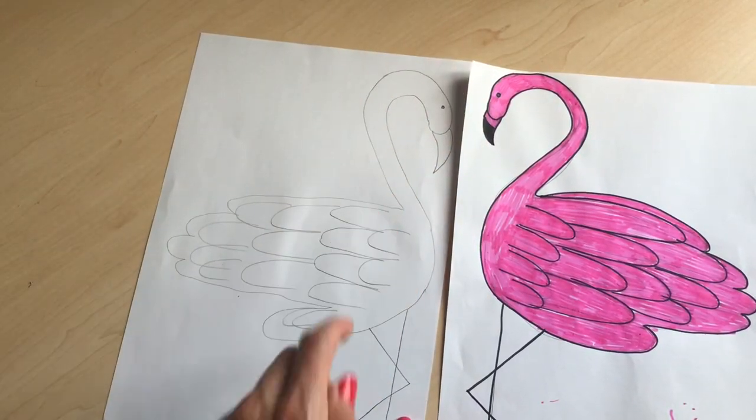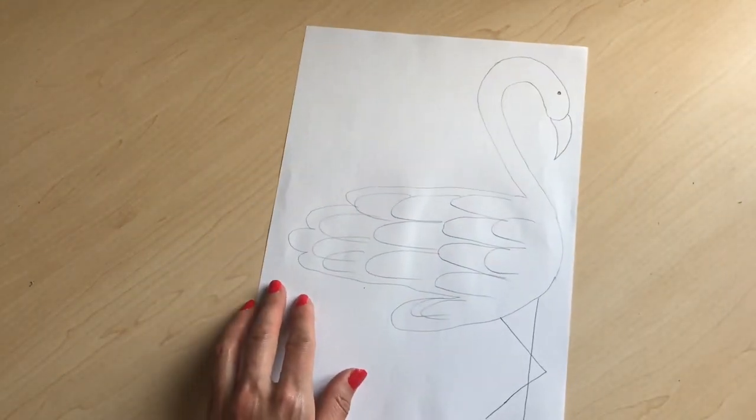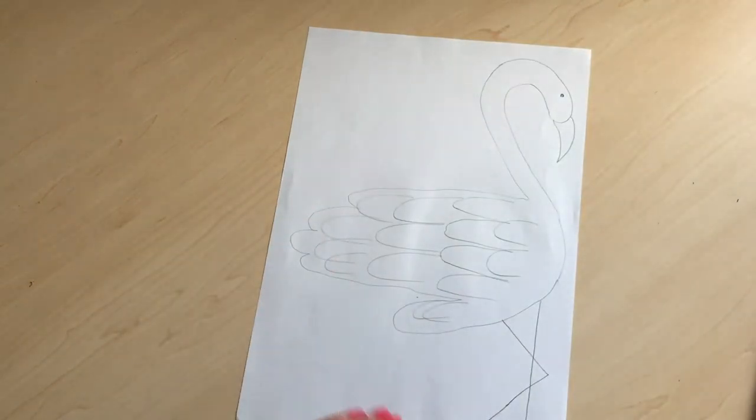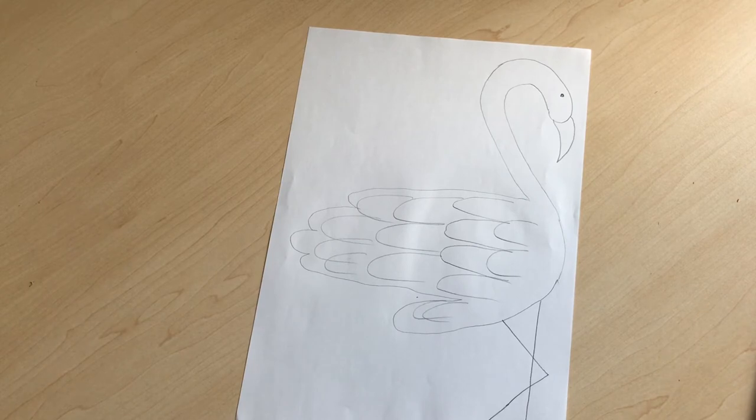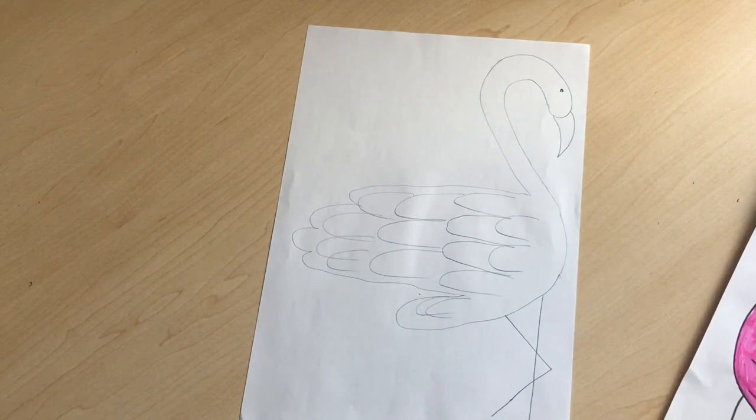Now you're ready to color in your flamingo. If you want to do it like a normal flamingo, do it pink. I've got an interesting fact: they are actually born with gray feathers but they turn pink because of their diet. The shrimp they eat actually turns their feathers pink.